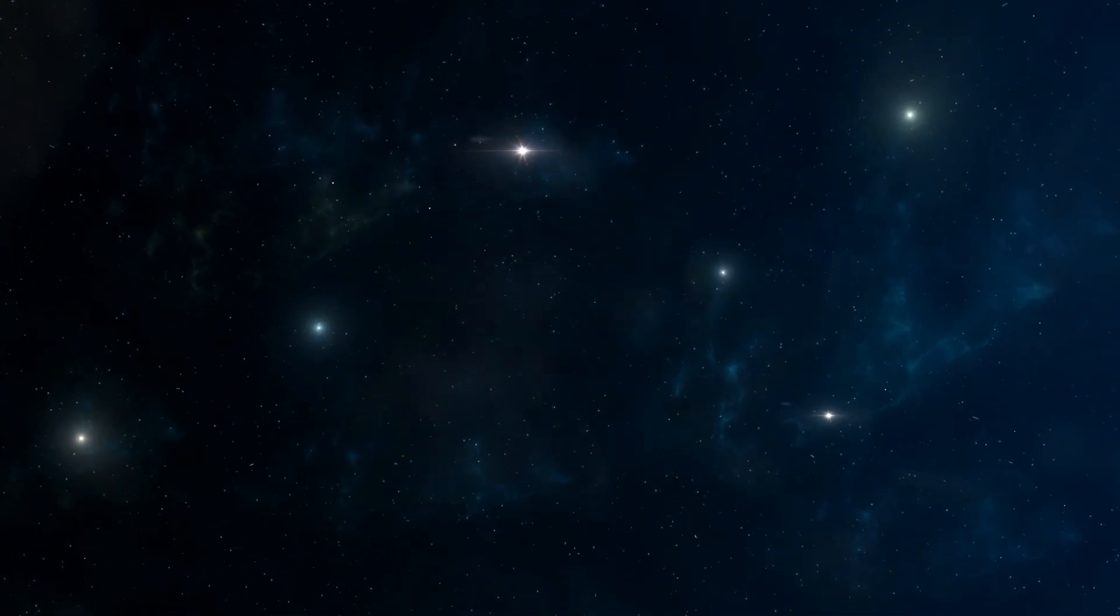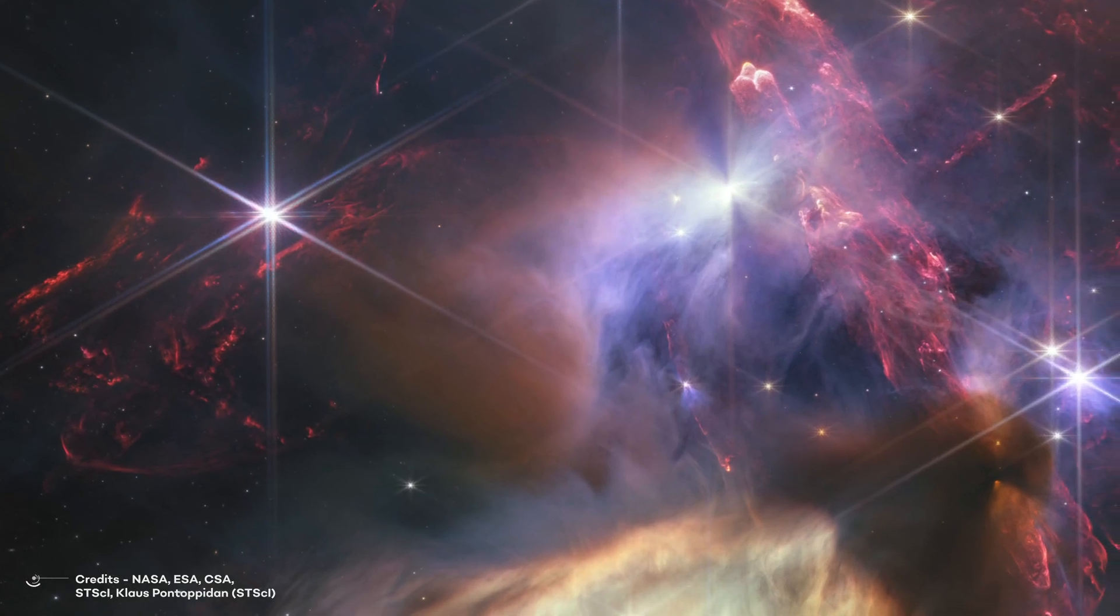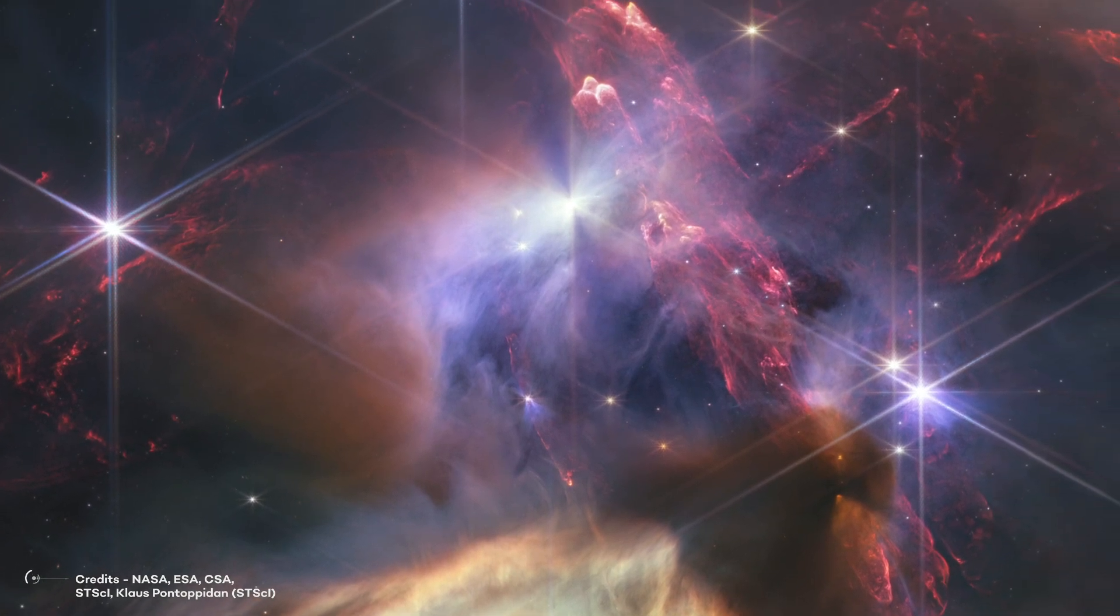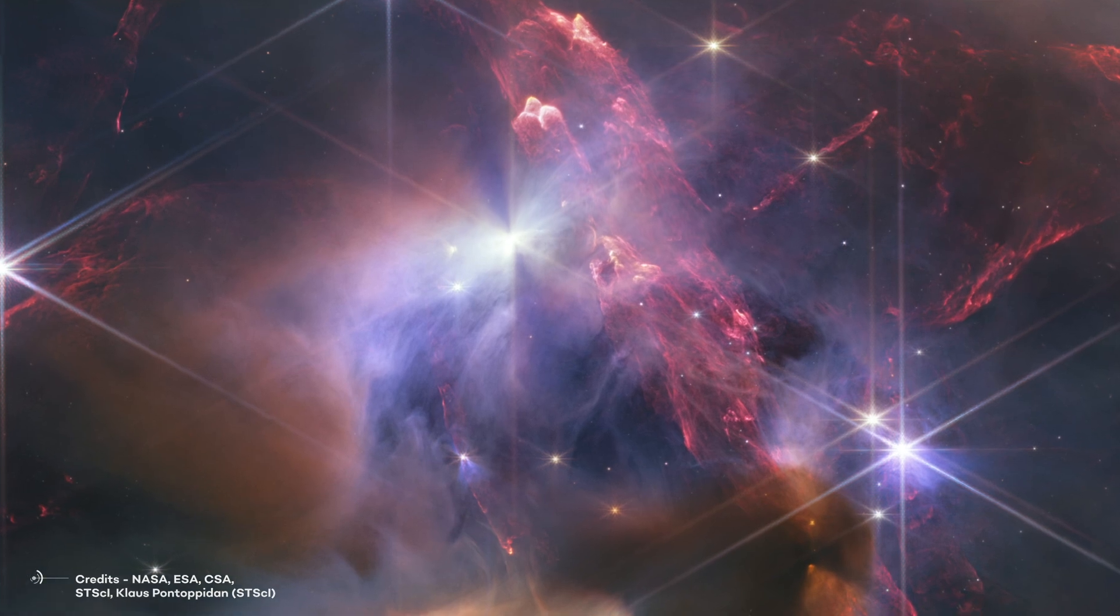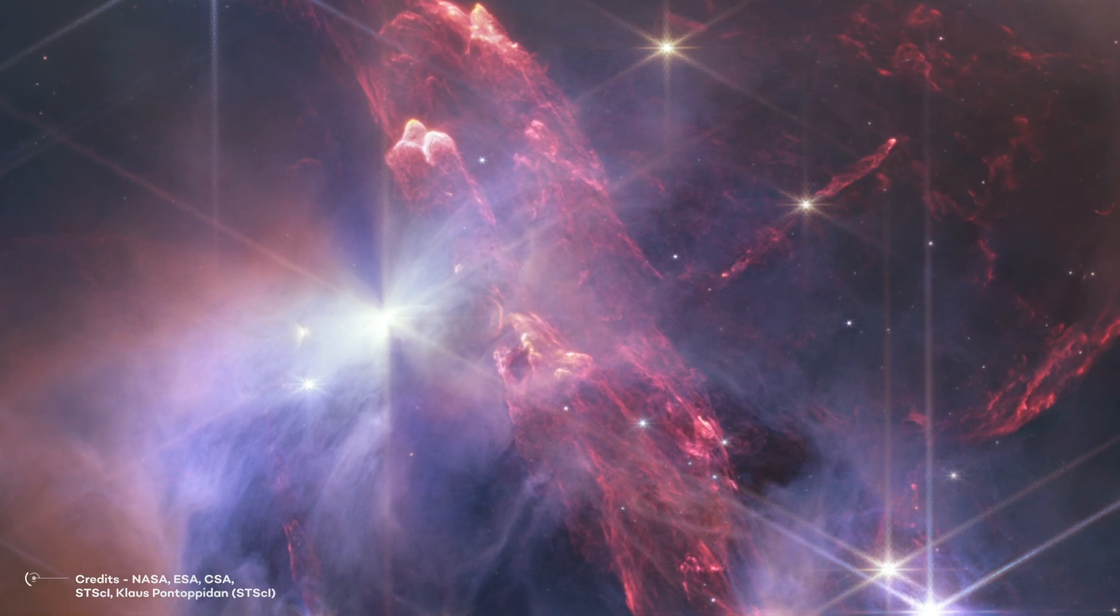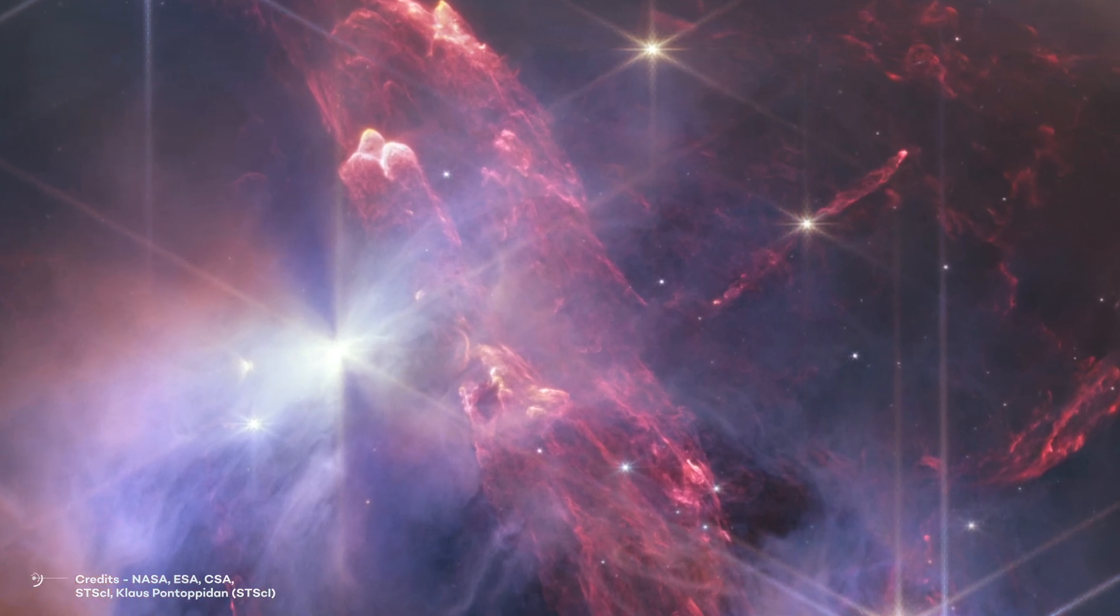In the close-up image taken by the Webb telescope, we can clearly see powerful jets shooting out from young stars. These jets collide with the surrounding molecular hydrogen, causing it to light up and appear as red gas. But what is really interesting is that some of the stars in the picture have a distinct shadow around them, which indicates the presence of a circumstellar disk.